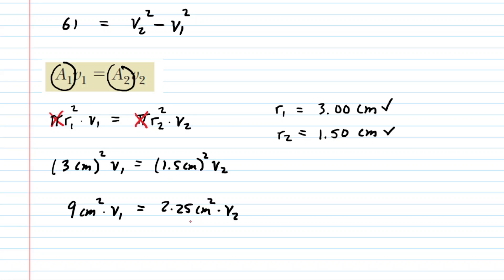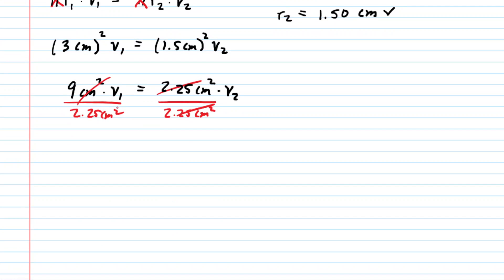We're getting there, but it's going to turn out to be useful to solve this for v sub 2. So go ahead and divide both sides by 2.25 centimeters squared. The left-hand side, when you divide, the centimeters squared will cancel, and then 9 divided by 2.25 is 4. So we have 4 times v sub 1 is equal to v sub 2.